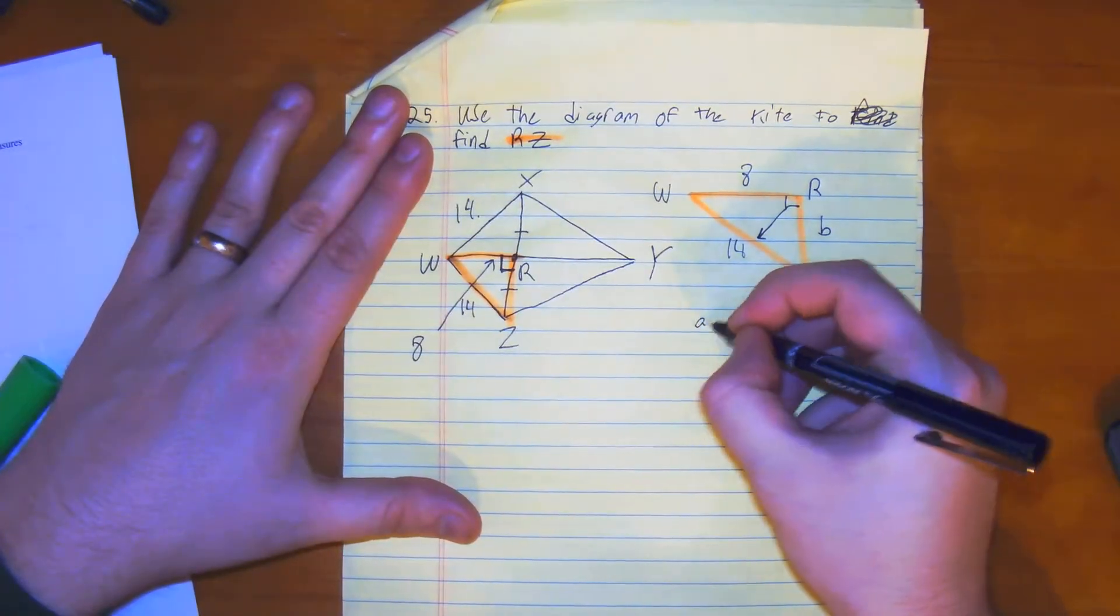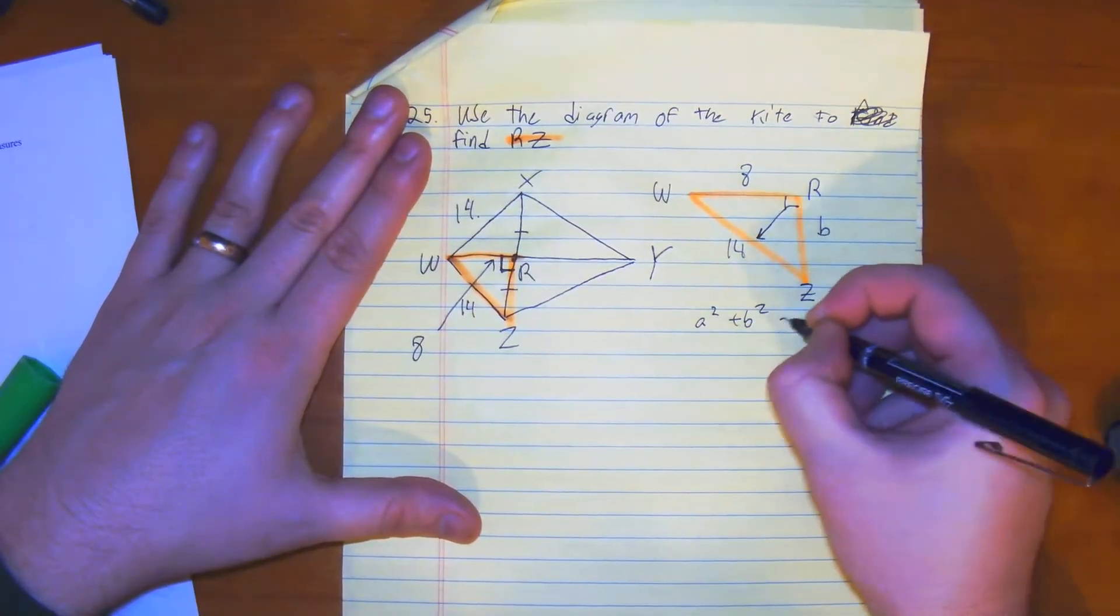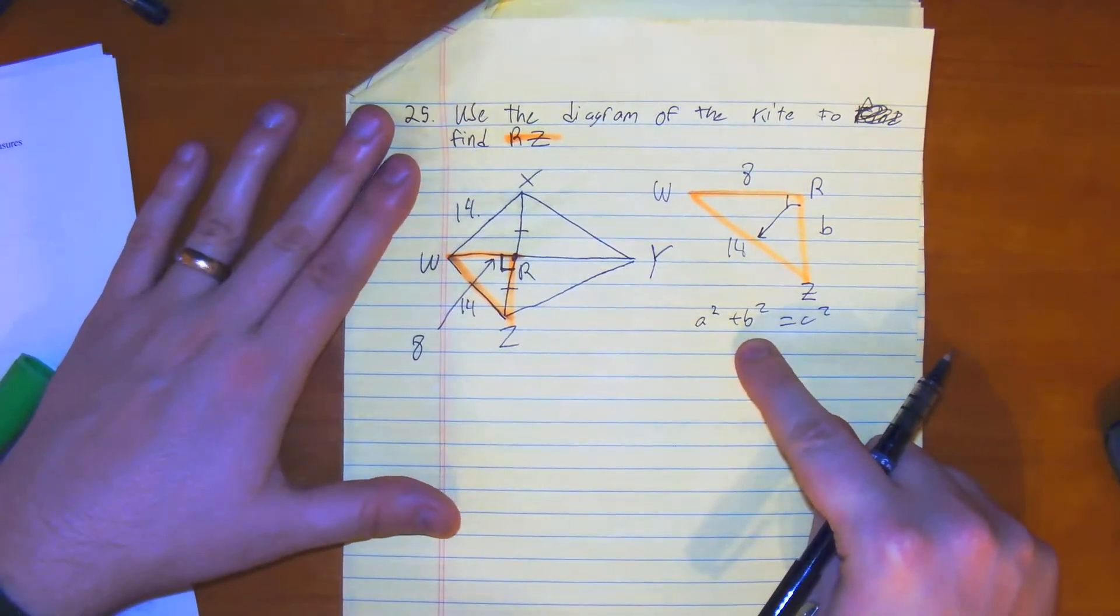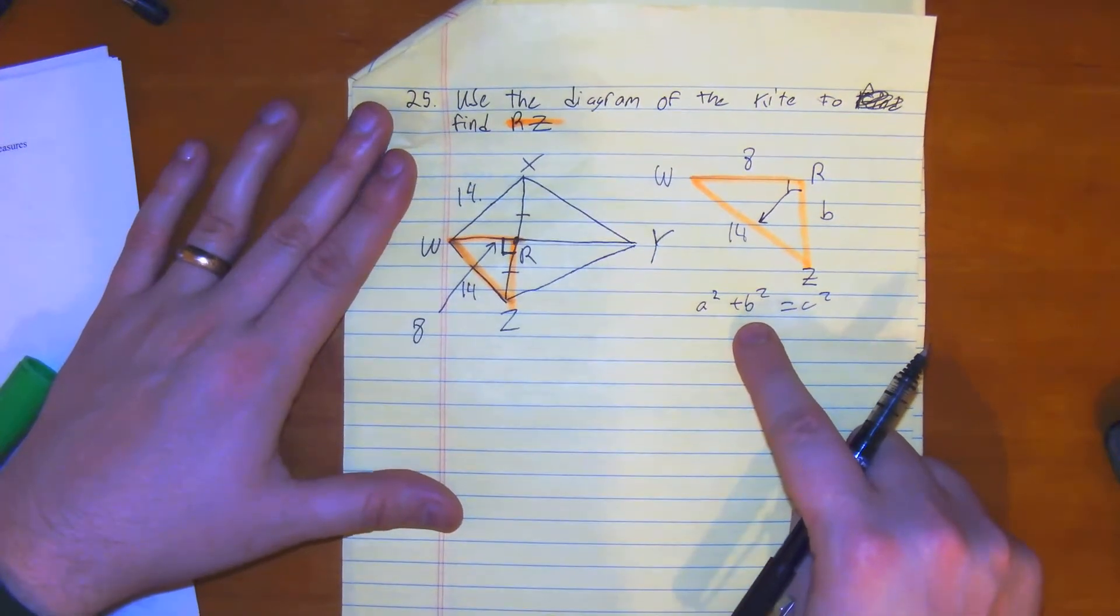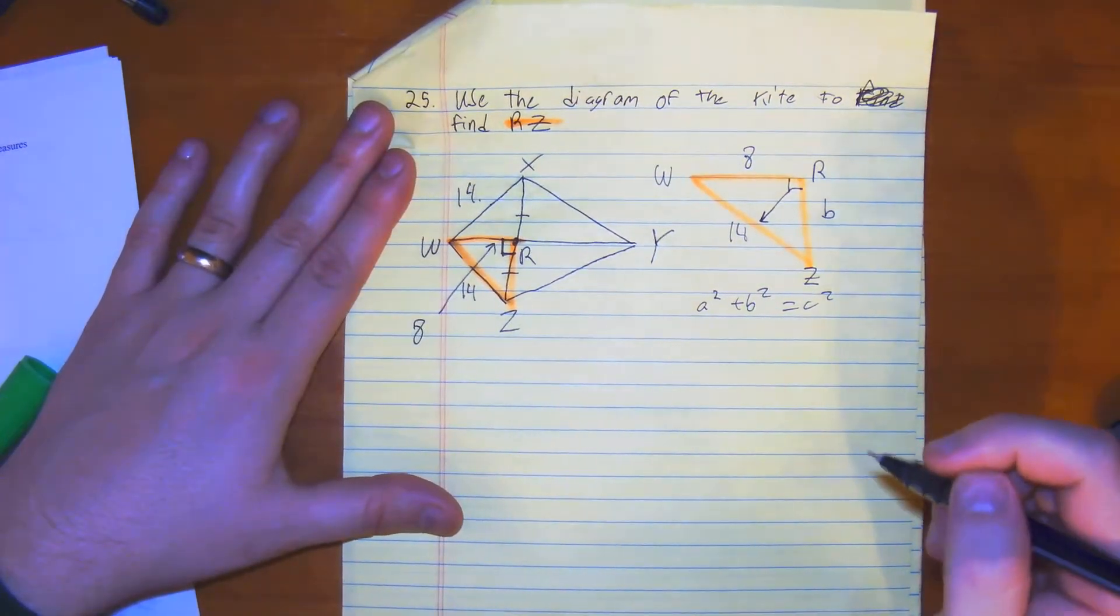So our Pythagorean Theorem, A squared plus B squared equals C squared. We're solving for our B. I'm going to show a cool little trick. No, actually I won't do that. So let's just do it as normal.